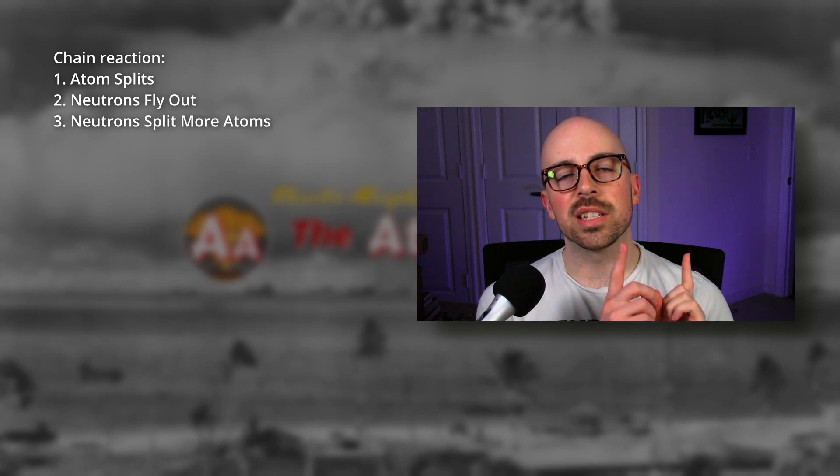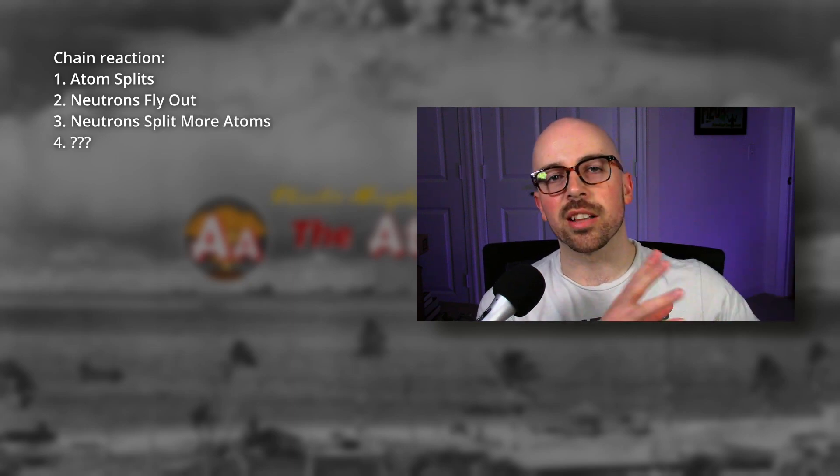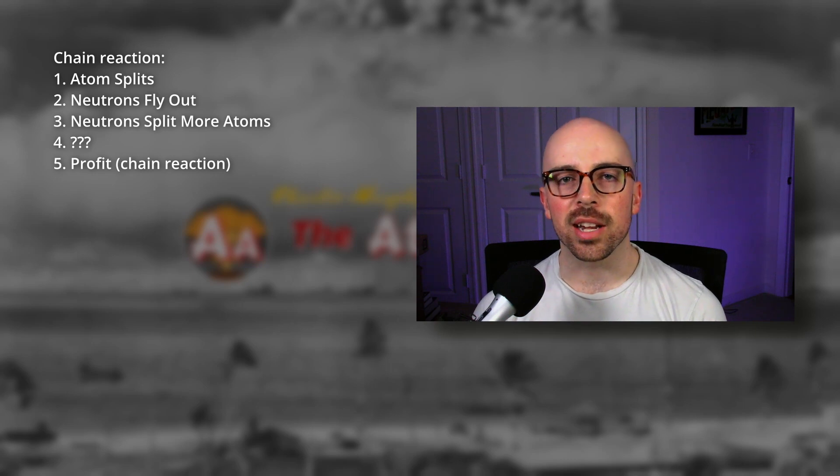So let's talk about chain reactions real quick. A chain reaction starts when an atom splits, and when an atom splits it gives off neutrons. If these neutrons find other atoms to split, this can keep accelerating, and so on and so forth — you get a chain reaction.